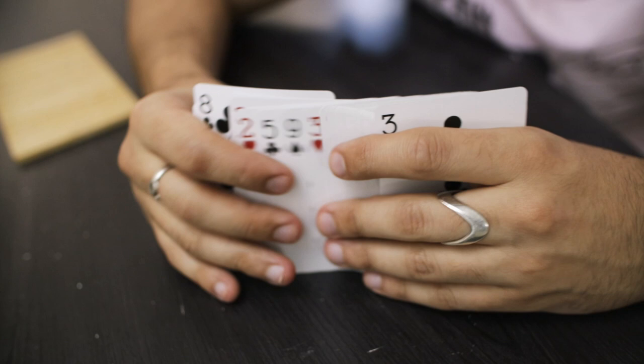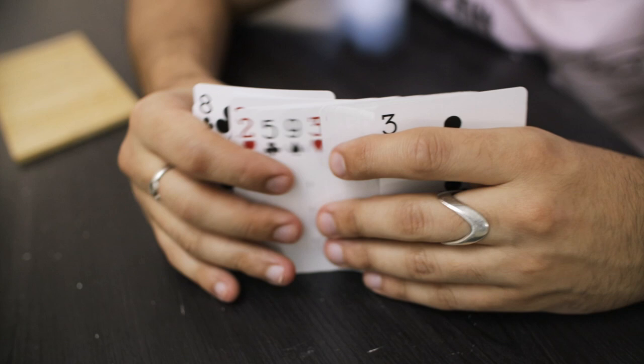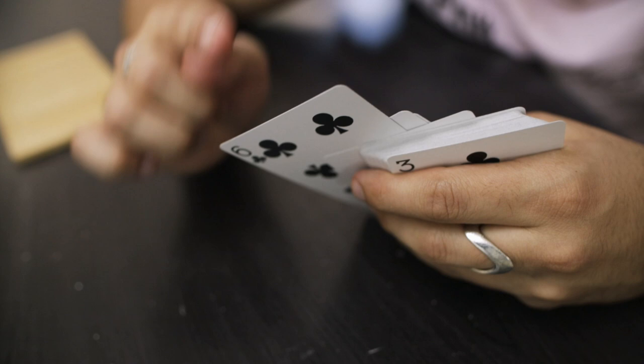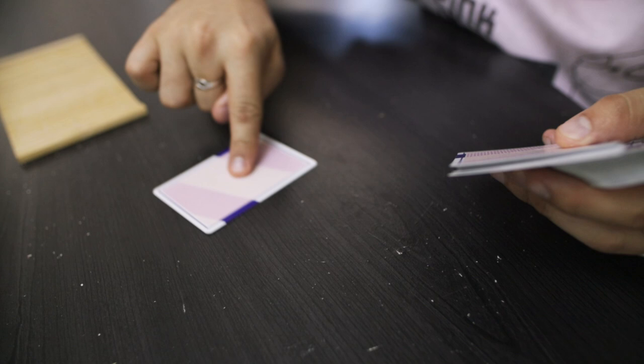So when the spectator is spreading this deck out to you, what you're looking for is the six of clubs. This is going to be your prediction card. So you're not going to show this to them, but you're going to take this card out and put it aside as your prediction.